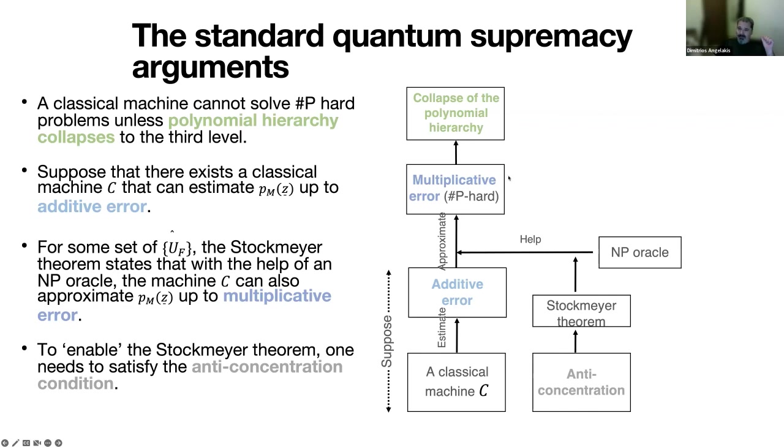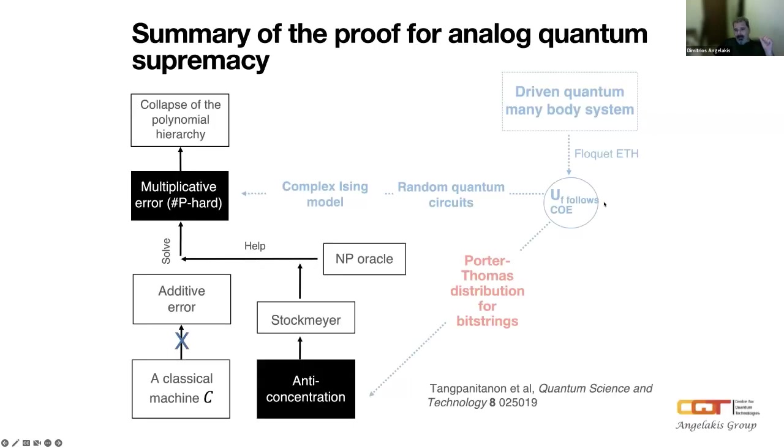Now we have normal, you know, many-body pulled out on the thermalized, the Floquet thermalized system. And we have a classical computer that is trying to follow and reproduce the dynamics and the sampling distributions. So assuming there is a classical machine that can estimate the probabilities P_MZ, which is basically the probability of the bit strings that we sample from the experiment up to additive error, then you can solve the usual way of doing this. If you use what is called the Stockmeyer theory and the help of a non-polynomial oracle, if this is possible, and if you start from what's called the anti-concentration condition, you can imagine this as a condition where the states in the Hilbert space spread and they diffuse throughout the Hilbert space. We'll see how this is enabled in our case.